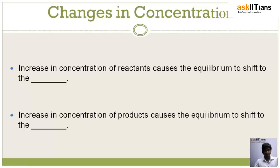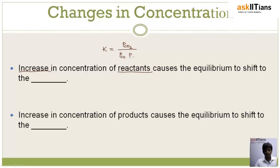Now, if the concentration of reactants increases, where should the equilibrium shift? The job of Le Chatelier's Principle is to tell us that. Consider an equilibrium involving the partial pressures of CO₂, CO, and O₂. The equation for it is: CO + O₂ reversibly forms 2CO₂.